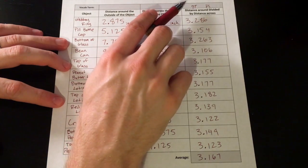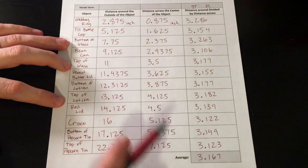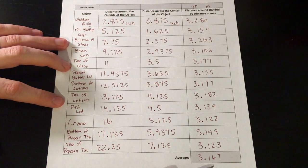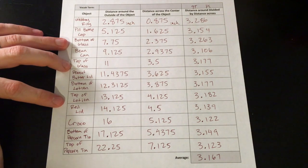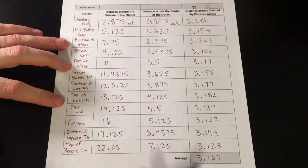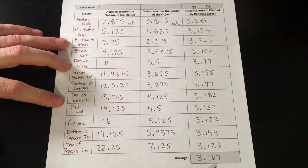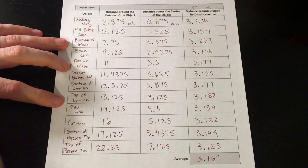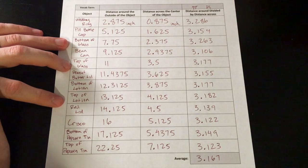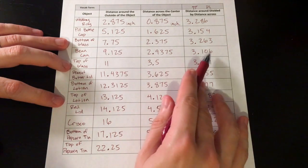Now pi isn't 3.167, but it actually is fairly close to that number. The most common approximation for pi is 3.14. So my average here, of these 12 objects, is actually pretty good that I was that close to that approximation of 3.14, here I'm getting 3.167. So what I want you to get from this is that the ratio of these two measurements is pi.